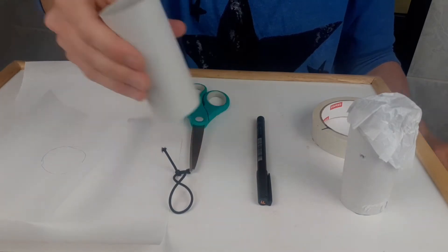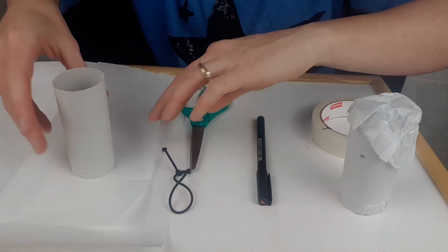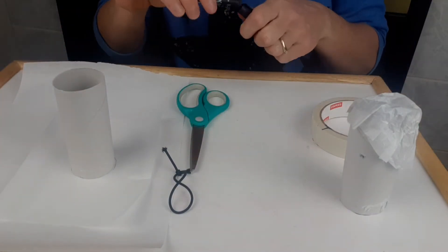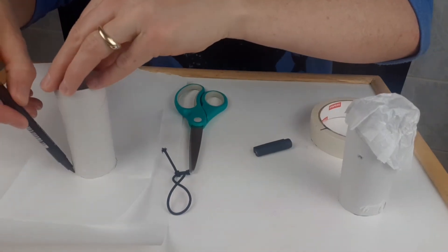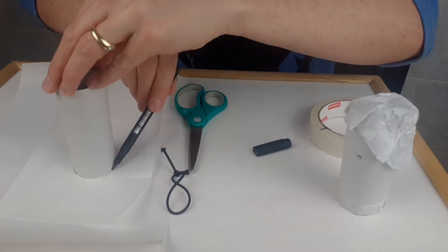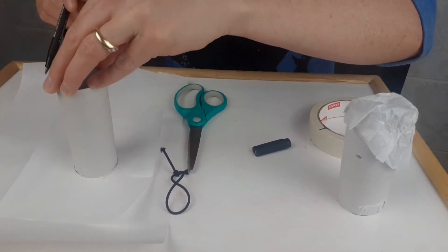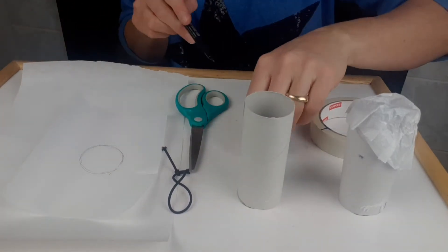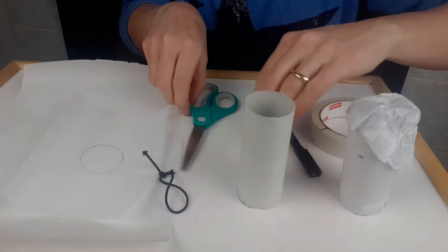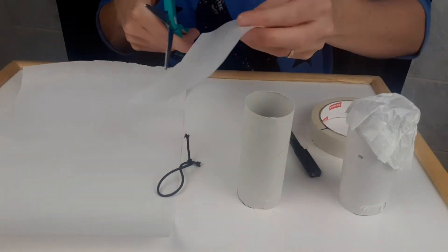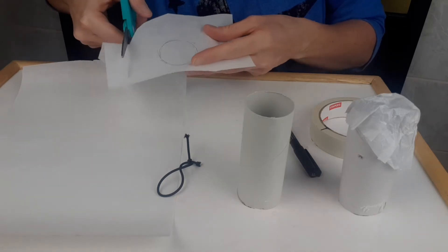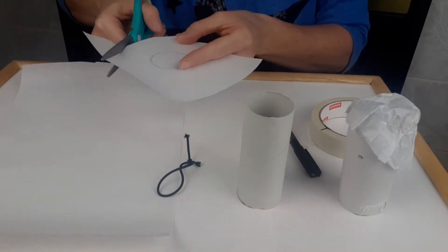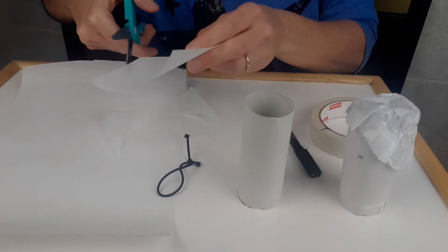Let's start by taking our toilet paper tube and putting it on top of our paper. Using a pen, we can trace around the edge of our toilet paper tube to make sure we're cutting it to the right size. Then, using our scissors, we can cut down our piece of paper around that circle, but make sure you leave enough space to put the elastic on.